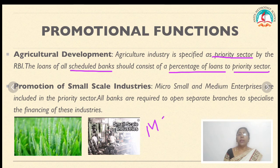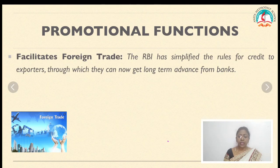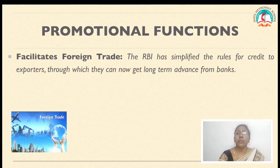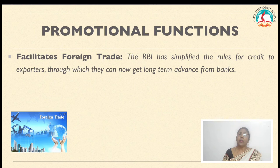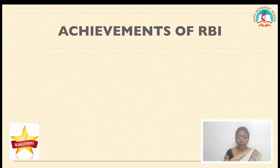Similarly, promotion of small scale industries: micro, small, and medium enterprises (MSMEs) are also included in the priority sector, just like agriculture. All banks are required to open separate branches to specialize in financing these industries. The next function is facilitating foreign trade — RBI has simplified rules for credit to exporters, allowing them to get long-term bank loan advances. RBI also supports the cooperative sector, which is started mainly for service motive; the government exempts some taxes for them, and RBI also relaxes certain rules and provides indirect financing to the cooperative sector.